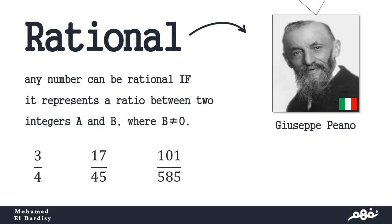Any number can be rational if it represents a ratio between two integers A and B, where B is the denominator which doesn't equal 0. Like for example, 3 over 4,